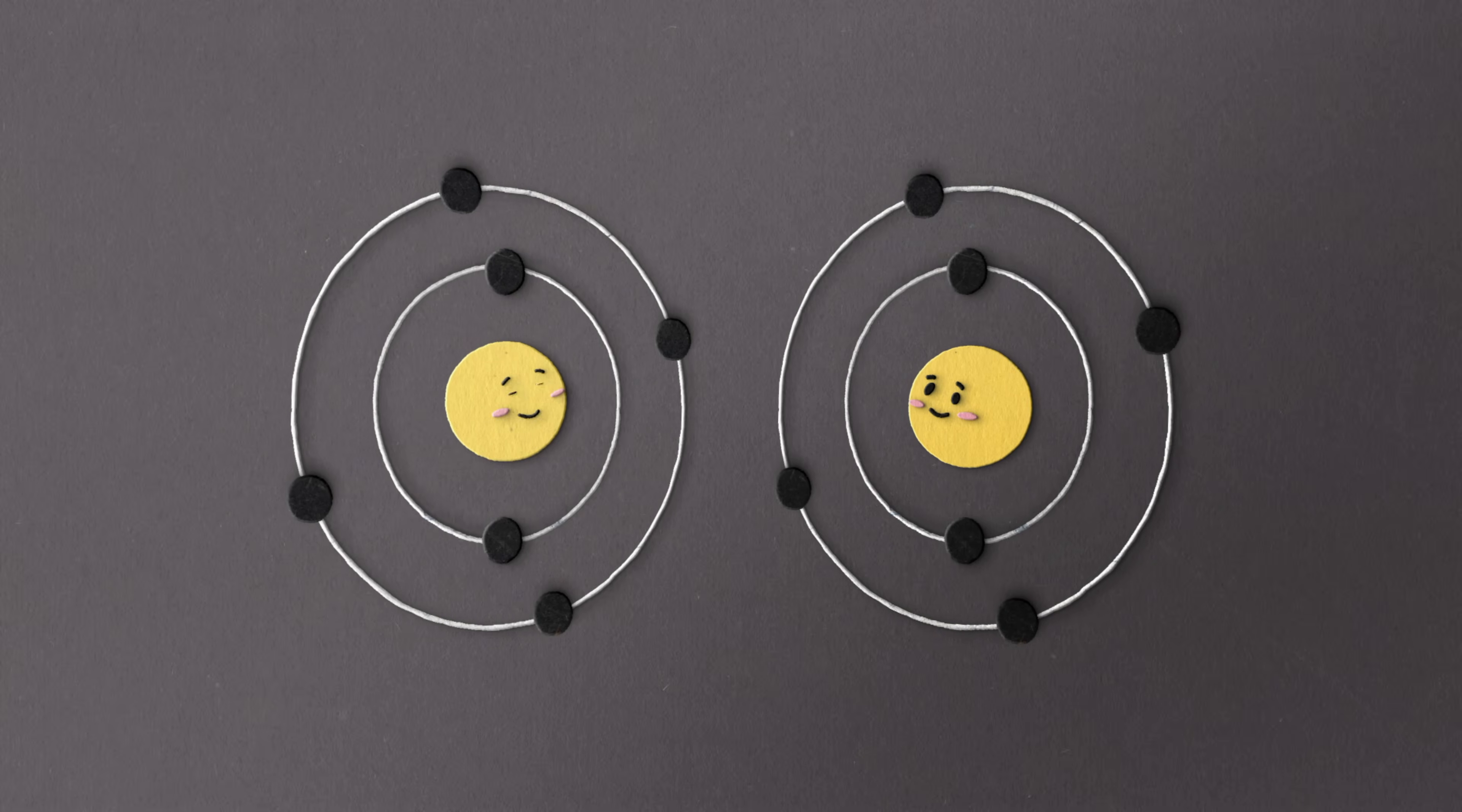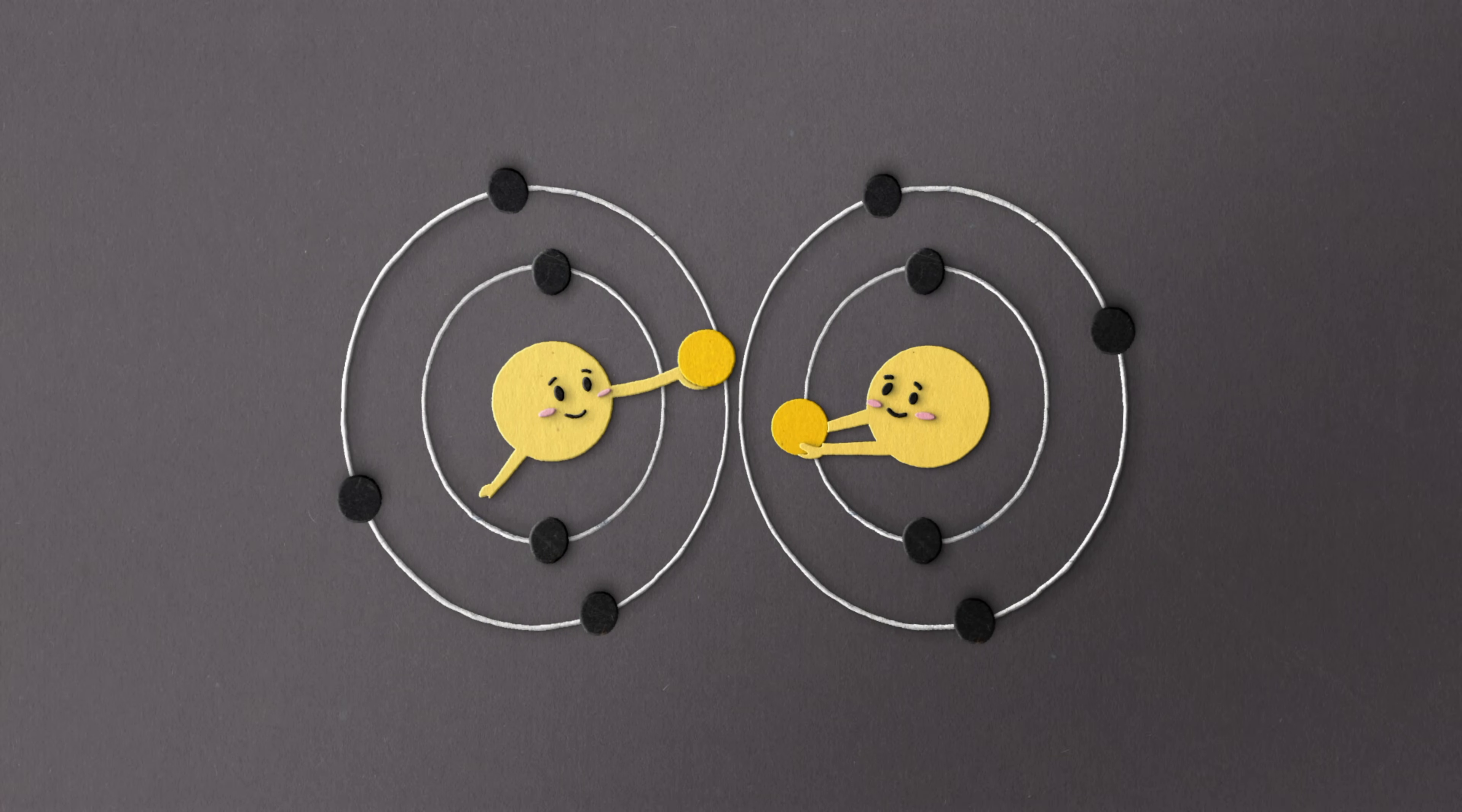You see, every atom of carbon has the ability to share each of its four electrons with four other atoms, thereby forming up to four covalent bonds.